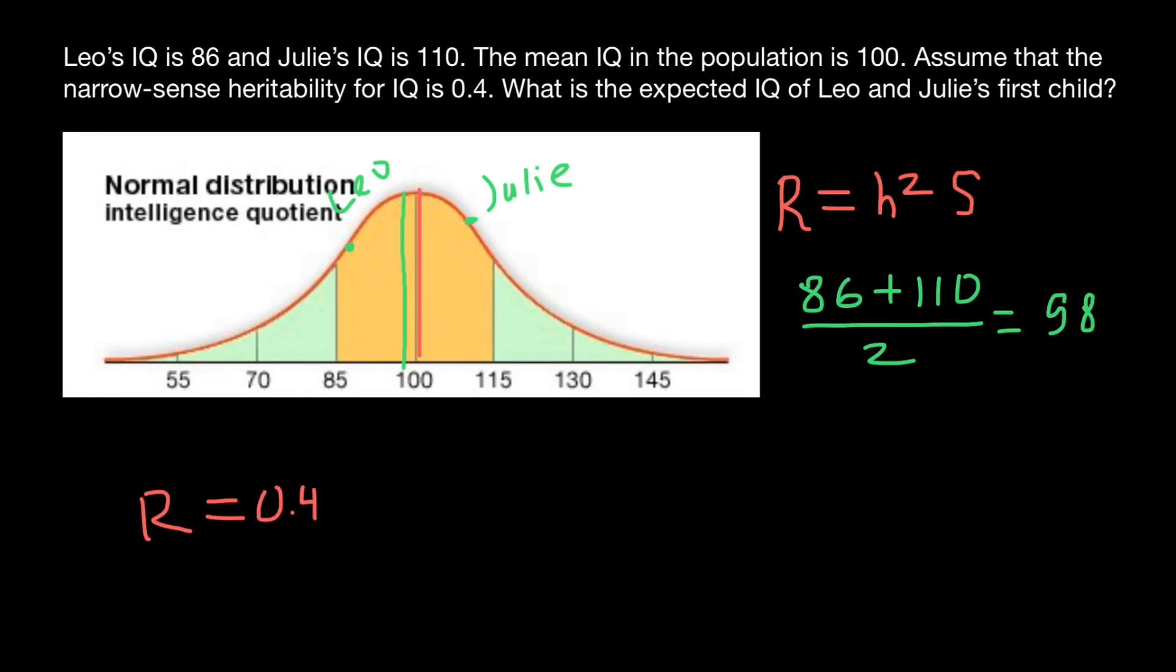Multiply it by selection differential of the parents—the mean of the parents and mean of the base population. So we have to multiply by 98 minus 100 plus 100. And our answer is going to be 99.2.